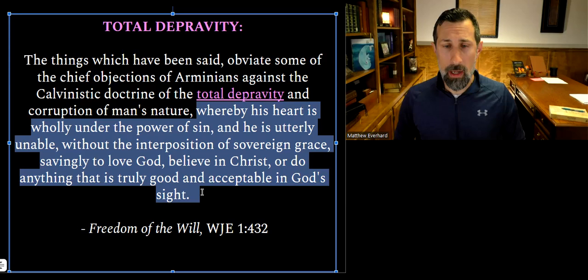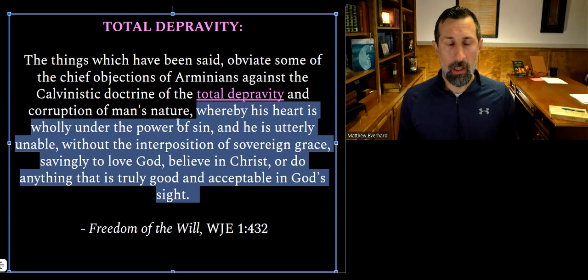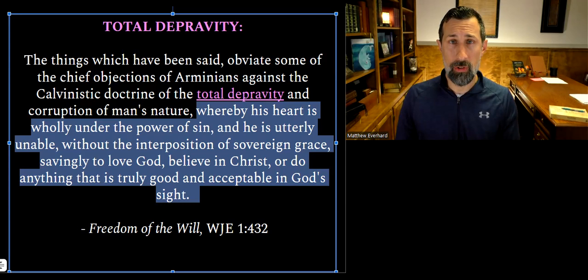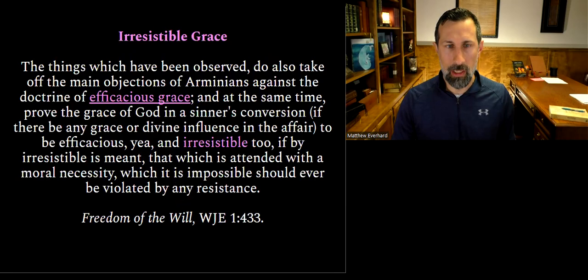Edwards upholds the point T of TULIP — total depravity — defining it as man's heart being wholly under the power of sin and being utterly unable, without the interposition of sovereign grace, to savingly love God and to believe in Christ. God has to sovereignly do something gracious to enable us to savingly love God. Because of sin, we would not choose God unless God interposed himself graciously to change the heart and rewire our affections.